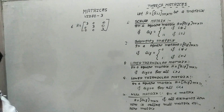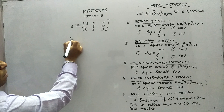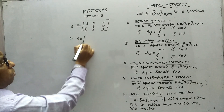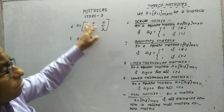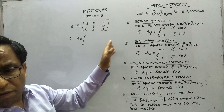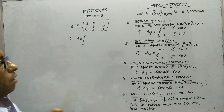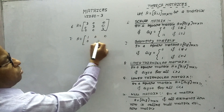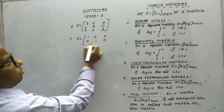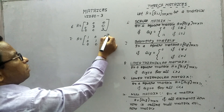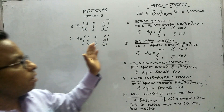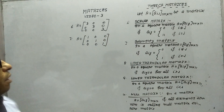Next is identity matrix. In an identity matrix, all the diagonal elements should be equal to 1. Example: A = [1,0,0; 0,1,0; 0,0,1]. This is the example of an identity matrix.